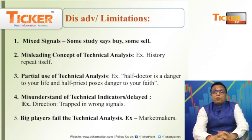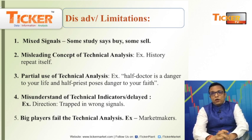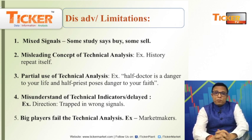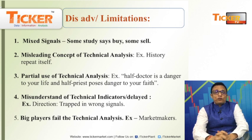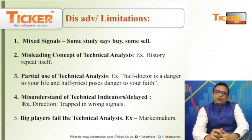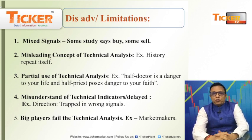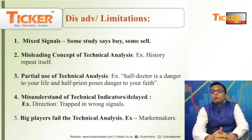Second limitation kya hai? Misleading concepts of technical analysis. Example kya hai? History repeats itself — aapne suna hoga — but it does not always happen. Third limitation: partial use of technical analysis. Half doctor is a danger to your life, and a half priest poses danger to your faith. Fourth: misunderstanding of technical indicators. Sometime few indicators delay signals dete hain, and then we get trapped also. And the fifth limitation is that big players fail the technical analysis — for example, market makers.